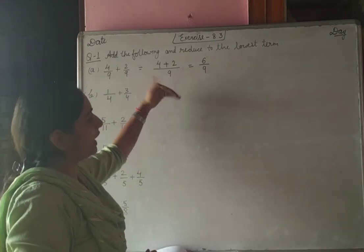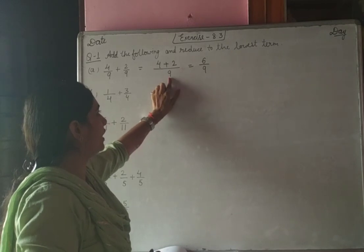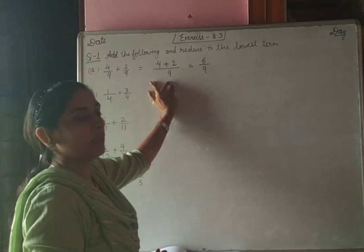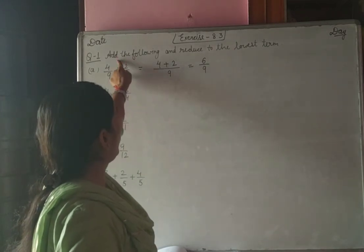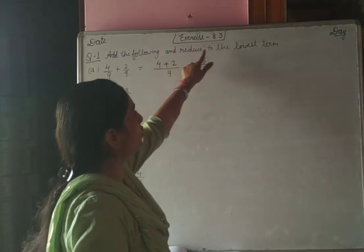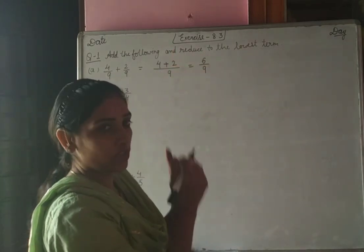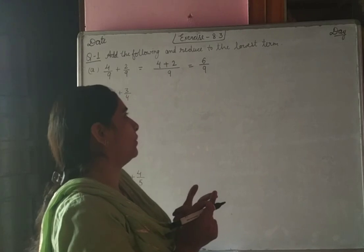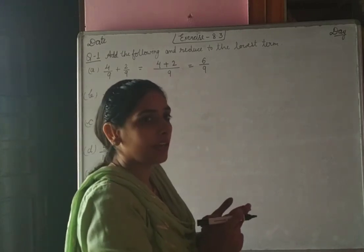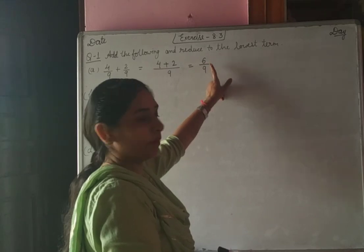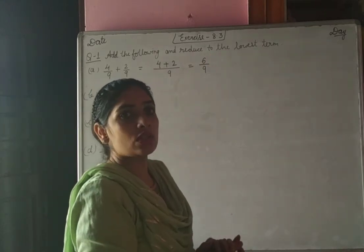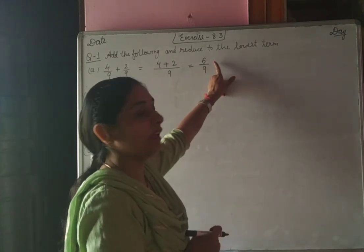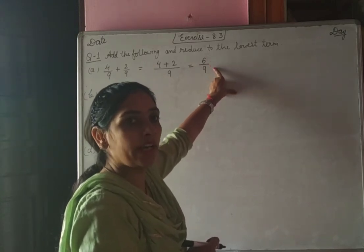So if like fractions are given, you directly add them, keeping the denominator the same, because the LCM will be one number. After adding, you reduce to the lowest term. If the fraction can be reduced to lowest form, we find the HCF of the numerator and denominator. For 6 and 9, the HCF is 3, so we divide both numerator and denominator by 3.